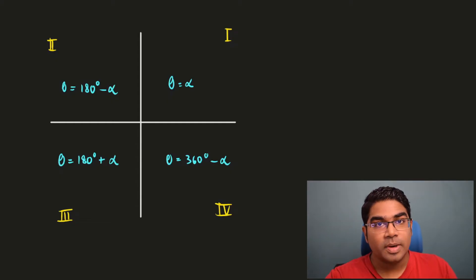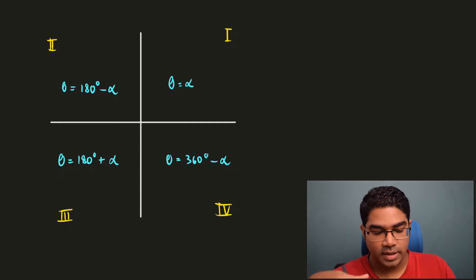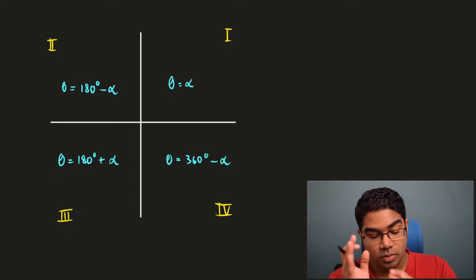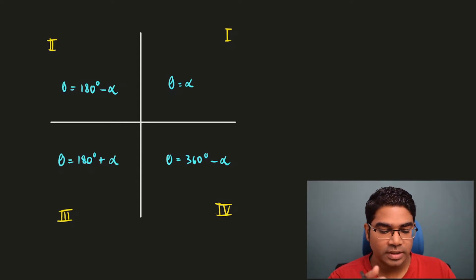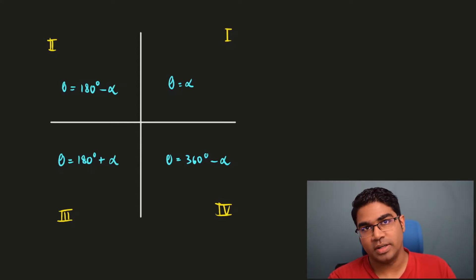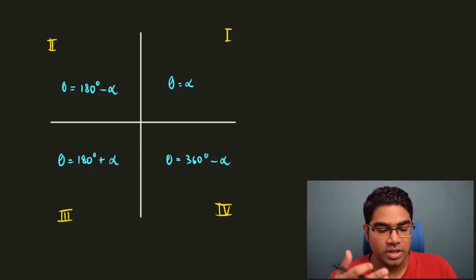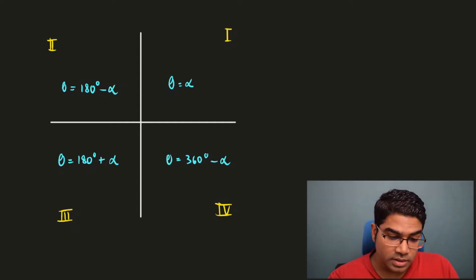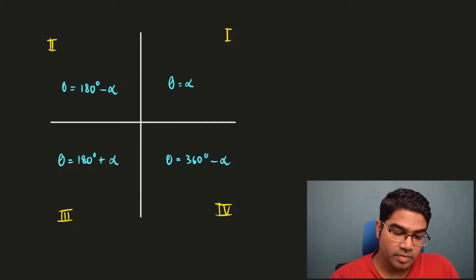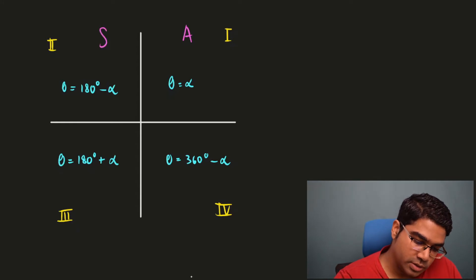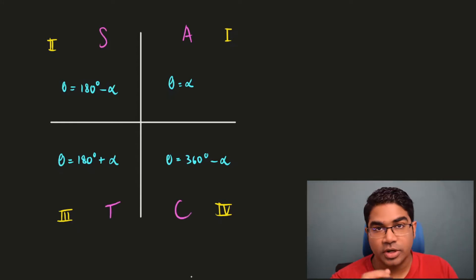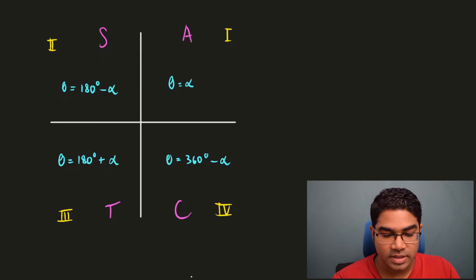I go into detail about this in the unit circle video, so please do check that out. We have four quadrants — 1, 2, 3, and 4 — and these are the relationships between theta and alpha in each quadrant. It is different for each quadrant. You have to remember: add sugar to coffee.